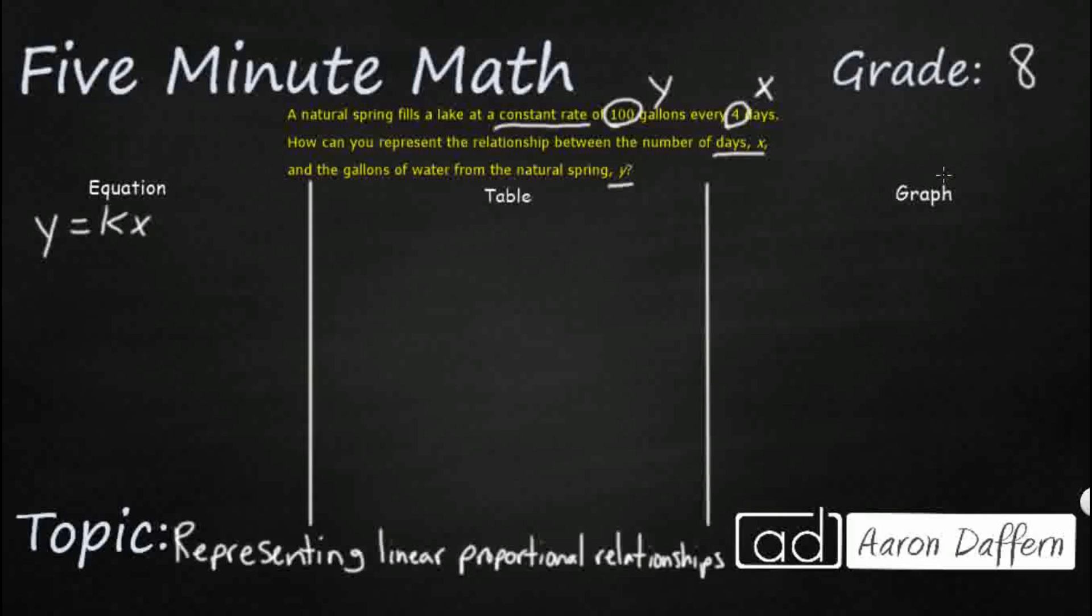But remember, in 7th grade, we spend a lot of time figuring out what that constant of proportionality is. If we divide both sides by x, what we get here is k equals y over x. So let's figure out what that rate is.